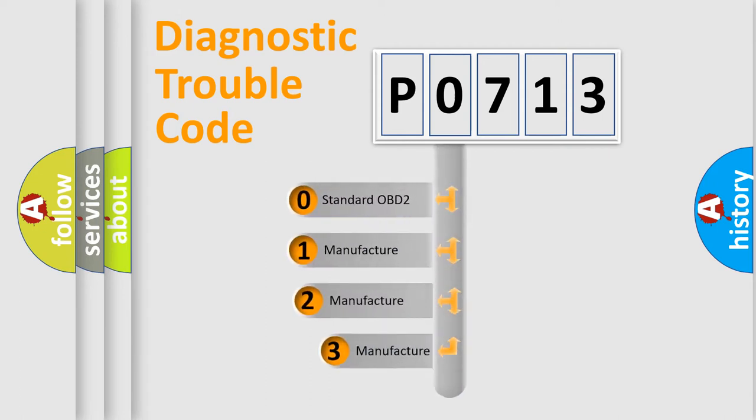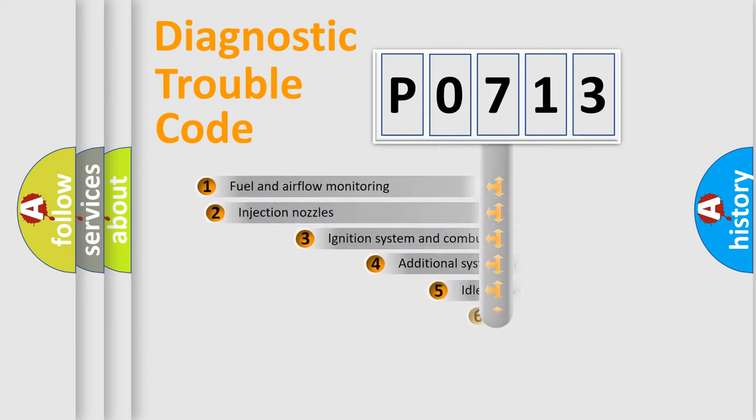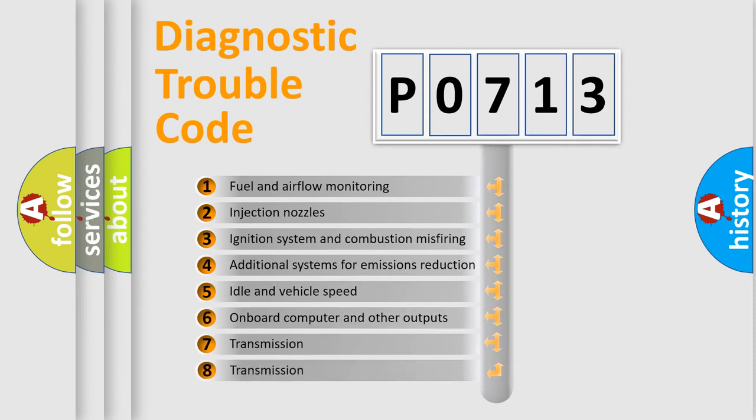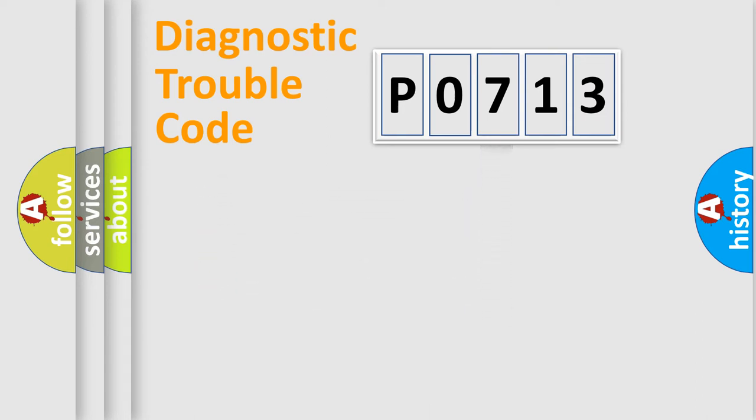If the second character is expressed as zero, it is a standardized error. In the case of numbers 1, 2, 3, it is a more prestigious expression of the car-specific error. The third character specifies a subset of errors. The distribution shown is valid only for the standardized DTC code.